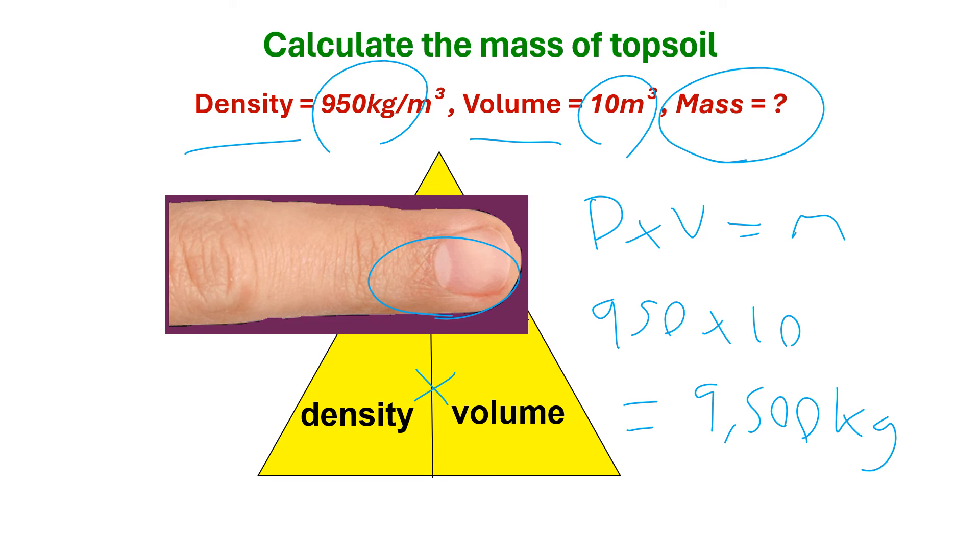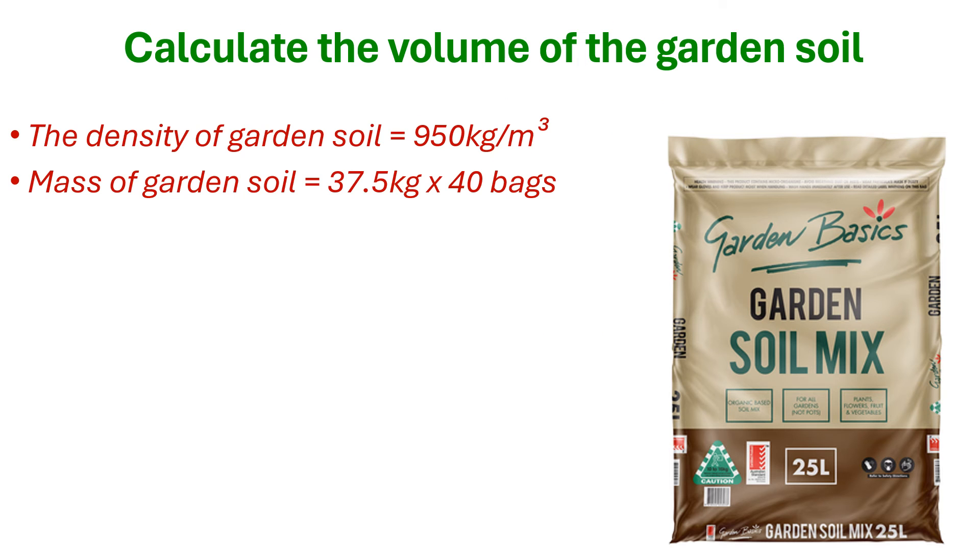And that's it. So we have one final variation of the density pyramid. This time we're going to work out volume using a similar problem to the one we had before. So our density of our soil is still around 950 kilograms per meter. But due to budget limitations, we can only afford 40 bags of soil from Bunnings. One liter equals roughly 1.5 kilograms for your soil.